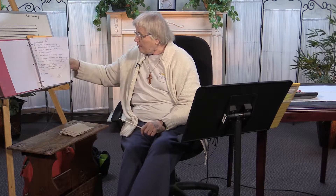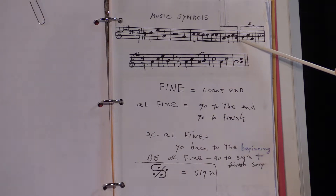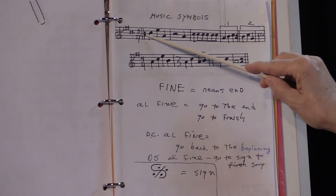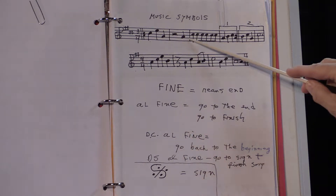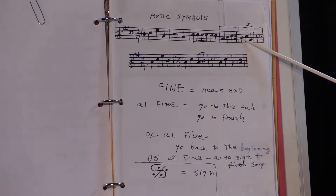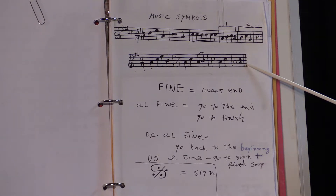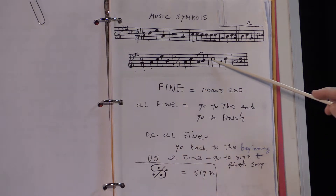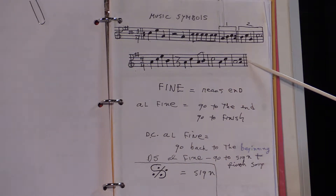With repeat signs: you get to the repeat mark and go back, but when you play it again, you skip the first ending because you played it the first time and play the second ending instead — that's called the second ending. Or with plain repeat signs, you get the repeat and just play the whole thing again. There doesn't have to be a first or second ending, but there is in a lot of music.